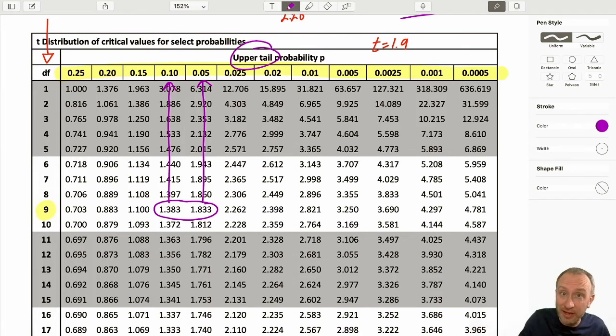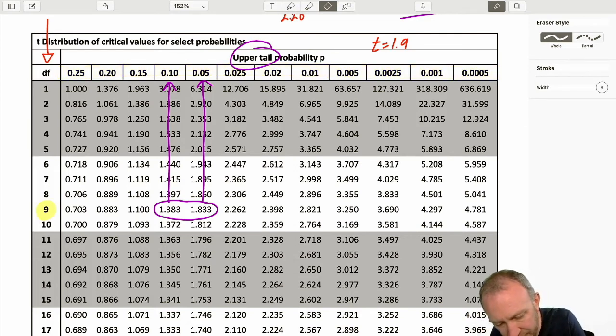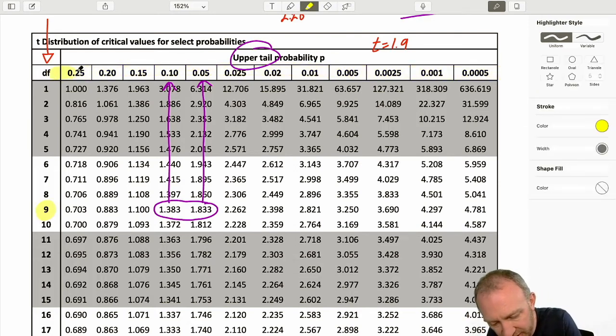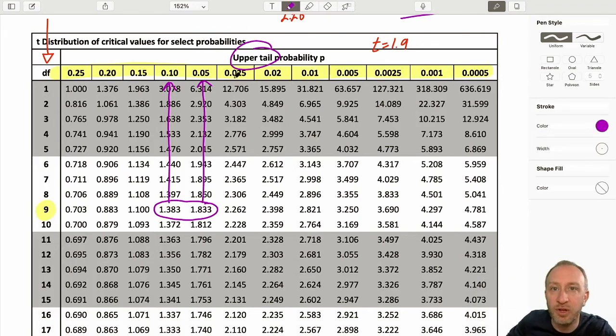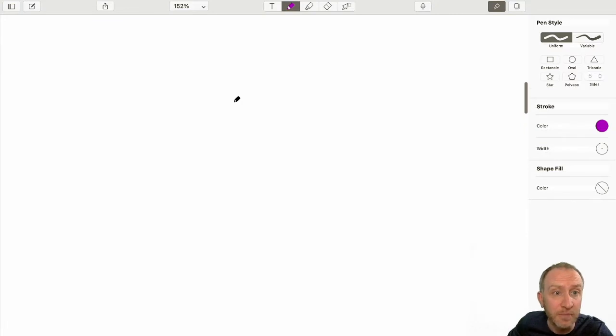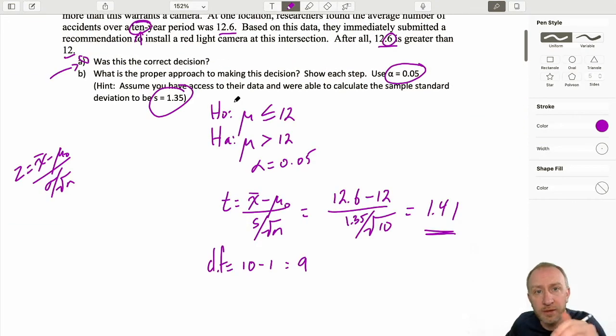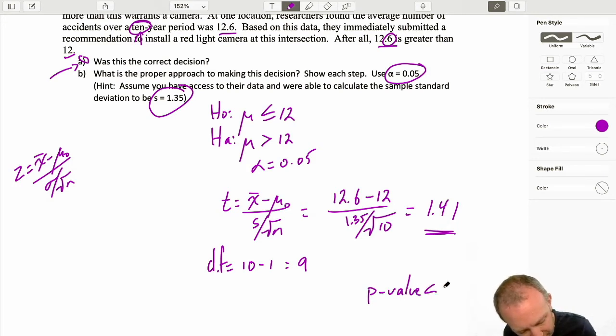If I were doing a lower tail test, I would use 1 minus both of those, and my relevant probability would be between 0.9 and 0.95. I'm not doing that, we're doing an upper tail. Everything's just as we want it. So my probability is between 0.05 and 0.1. In fact, that's my p-value. It's going to be less than 0.1, greater than 0.05.